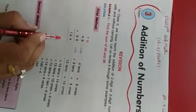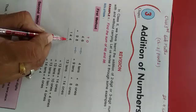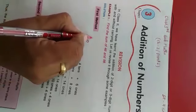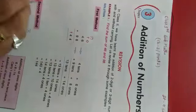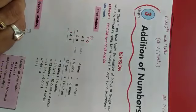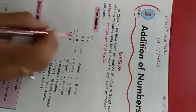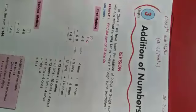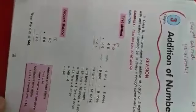Using the second method, standard column addition: 6 + 8 = 14. Write 4 in the ones place and carry 1 to the tens place. Now add the tens digits: 4 + 9 = 13, and adding the carry gives 13 + 1 = 14.